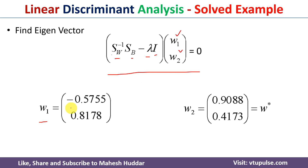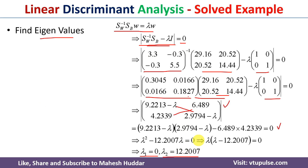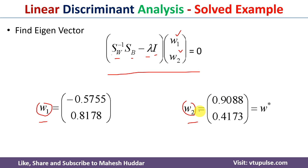In this case, I got w1 = (-0.5755, 0.8178) using lambda = 0, and w2 = (0.9088, 0.4173) using lambda = 12.2007. Since lambda2 is greater than lambda1, w2 is considered the best eigenvector. Since I am interested in only one linear discriminant, I will use w2 and represent it as w*.